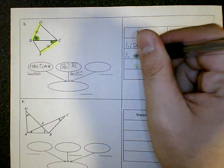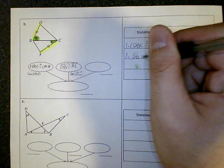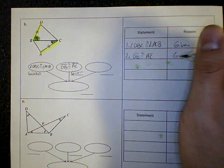And statement number 2, DB is congruent to AC. That's also given.